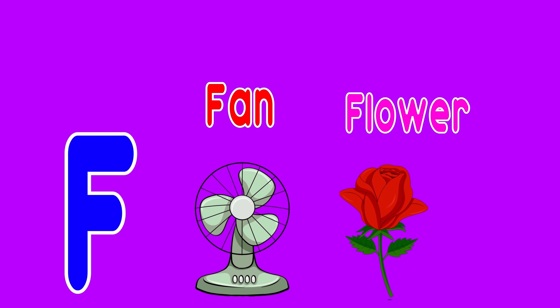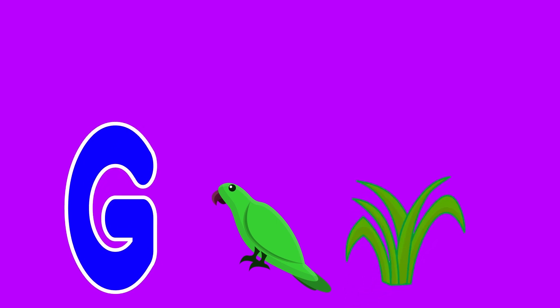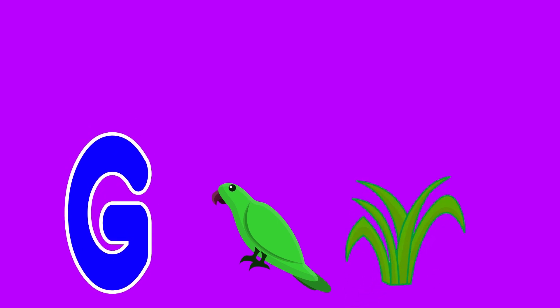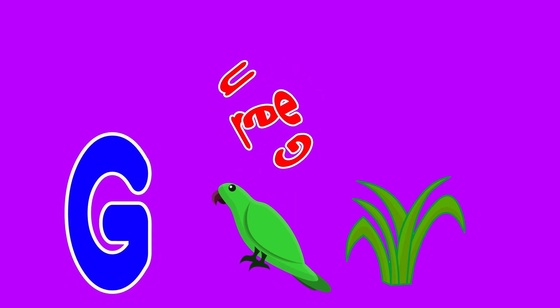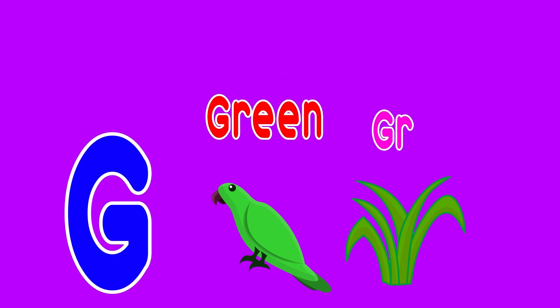G is for Green. G-G-Green. G is for Grass. G-G-Grass. G is for G-G-G-Green. G is for G-G-G-Grass.